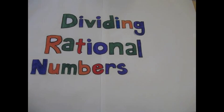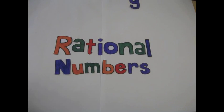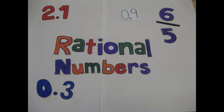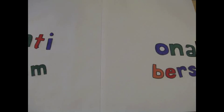We're going to demonstrate how to divide rational numbers when working with decimals. A rational number is any number that can be expressed as a fraction. 6 over 5, 1.2, and 3.4 are all examples of rational numbers.